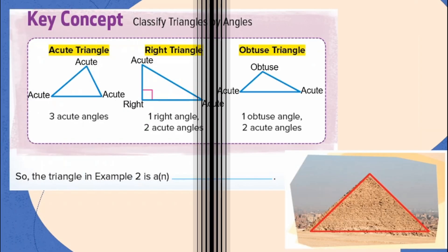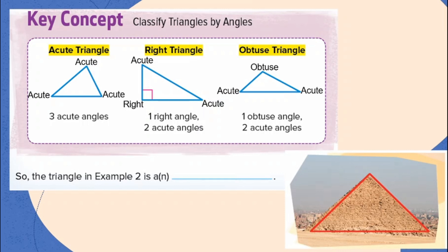These are the classification of triangles according to its angles. Let's begin with the first one: acute triangle. Acute triangle contains three acute angles, which measure less than 90 degrees. Here we have an acute angle on the left, another acute angle on top, and another acute angle on the right. A triangle with three acute angles is what we call an acute triangle.